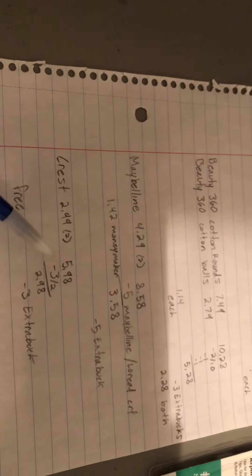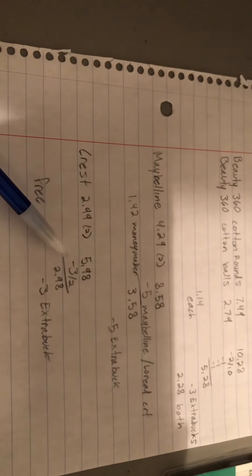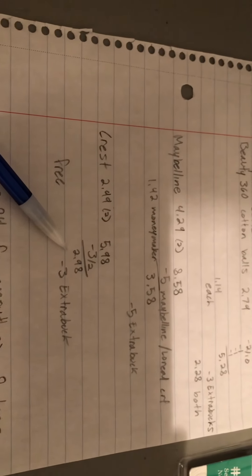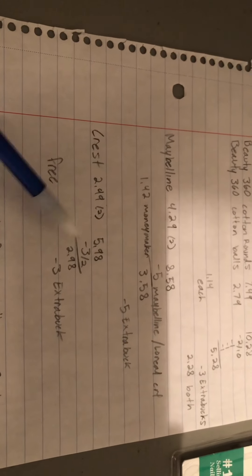Next deal we'll talk about is the Crest. The Crest this week is $2.99 for one, you'll purchase two for $5.98. Right now there's a $3 off of two CVS manufacturer digital coupon bringing your total down to $2.98, and you'll get back a $3 extra buck making it completely free.